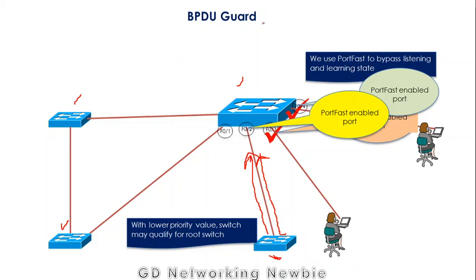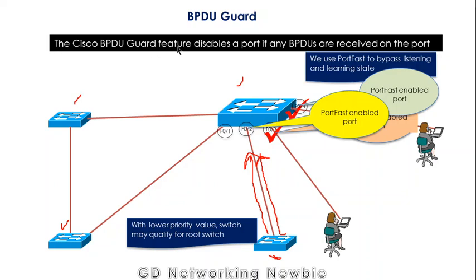The solution is provided by BPDU Guard. The Cisco BPDU Guard feature disables a port if any BPDUs are received on that port. This port will be disabled as soon as this switch tries to send BPDUs to it. With this feature, we can avoid the problem of having a new root switch introduced into our network, which may create multiple problems. This is the use of BPDU Guard in STP.